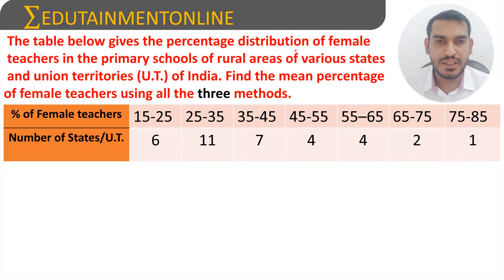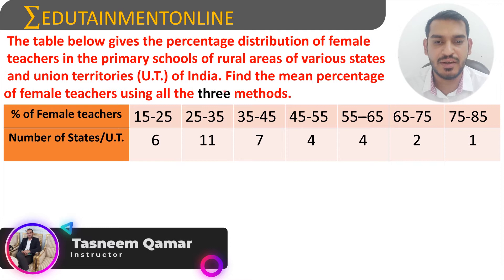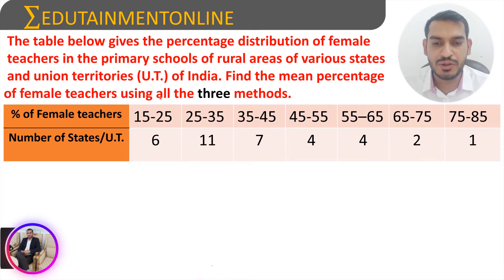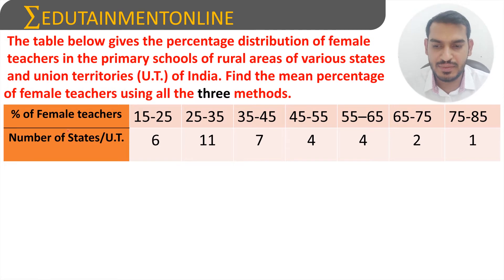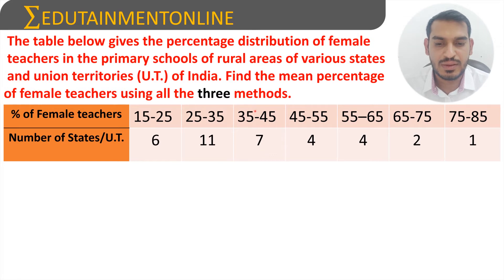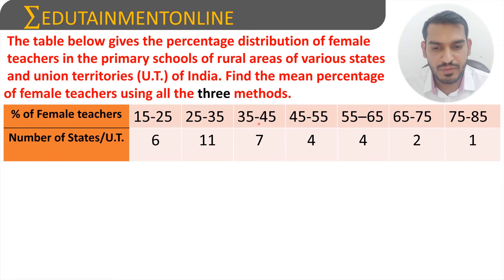The table below gives the percentage distribution of female teachers in the primary schools of rural areas of various states and union territories in India. Find the mean percentage of female teachers using all three methods. The data shows: 15–25% in 6 states, 25–35 in 11 states, 35–45 in 8 states, 45–55 in 4 states, 55–65 in 4 states, 65–75 in 2 states, and 75–85 in 1 state.